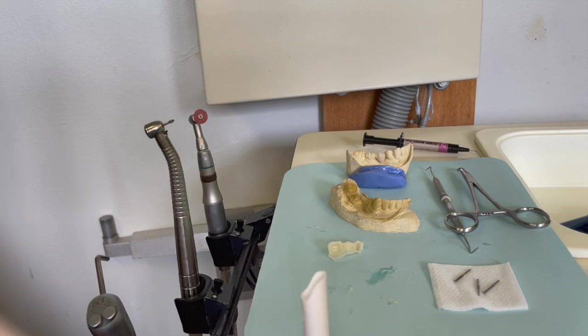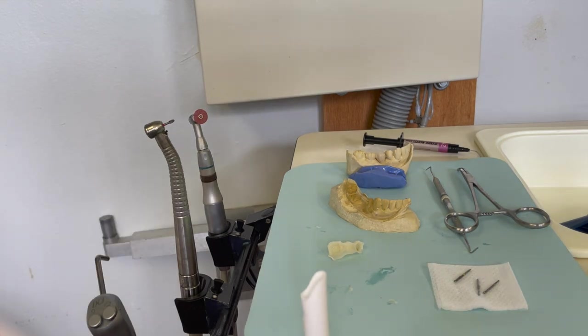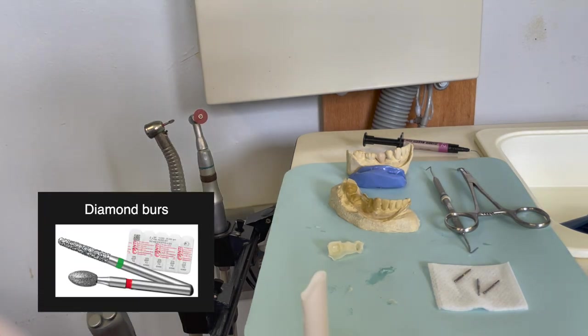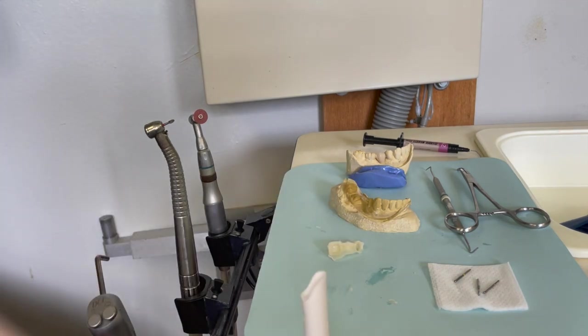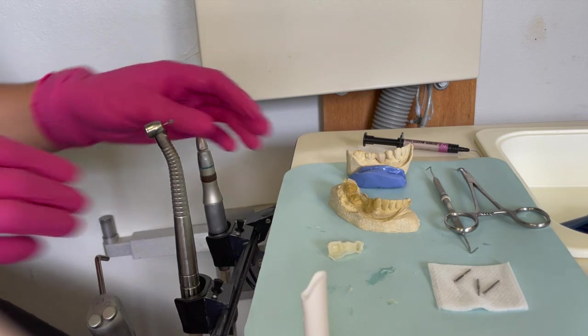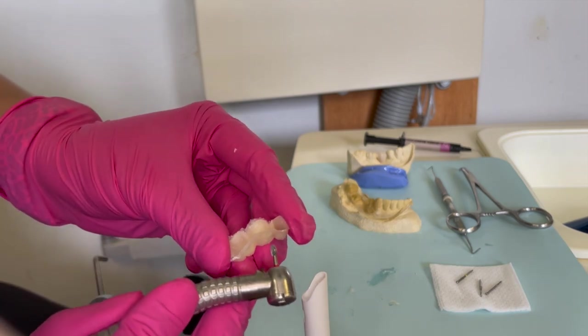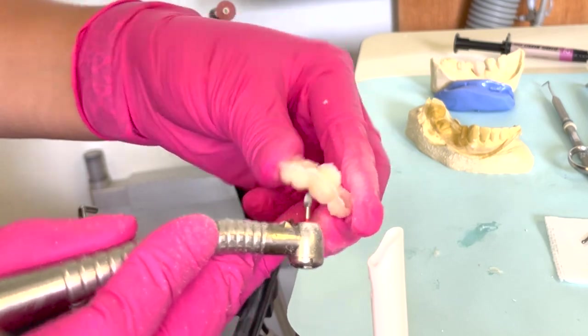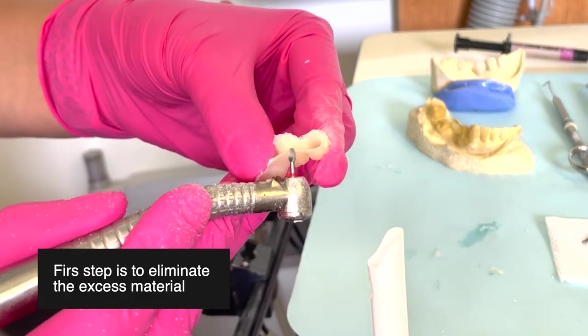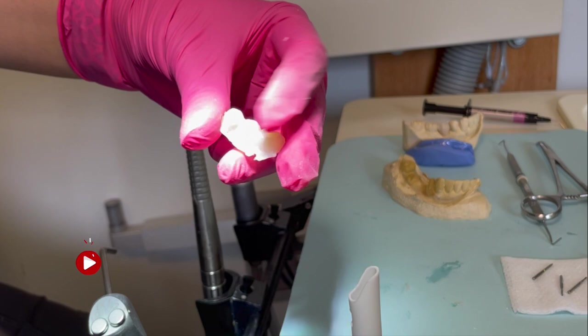For this one, I'm starting with the football carbide. It's my favorite burr to trim and start trimming with. You can also use a diamond burr or an acrylic burr, especially just to get the excess, not really to get too close to the margin. All I'm doing is getting the excess, not really worrying too much about finishing the margin or everything else.